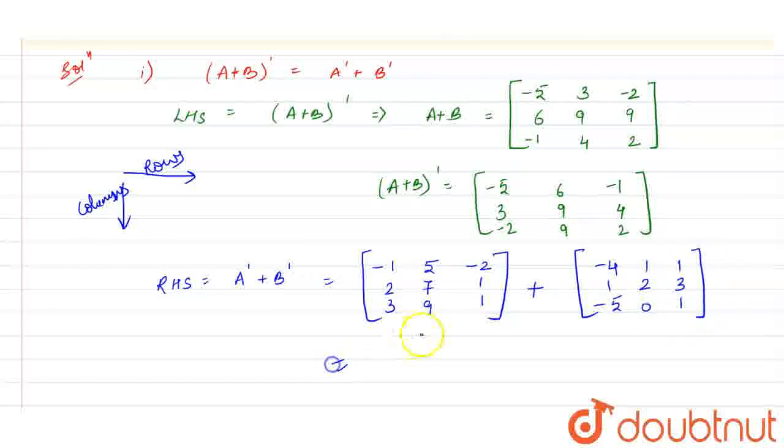Alright, so let us add these two matrices. So this is minus 1, minus 4 will be minus 5, 5 plus 1 is 6, minus 2 plus 1 is minus 1, 2 plus 1 is 3, 7 plus 2 is 9, this will be 4, 3 minus 5 is minus 2, 9 plus 0 is 9 and 1 plus 1 is 2. So this is the RHS we are getting.